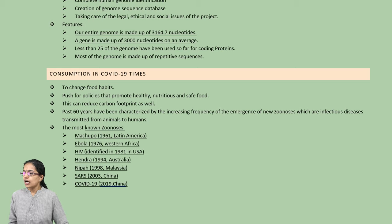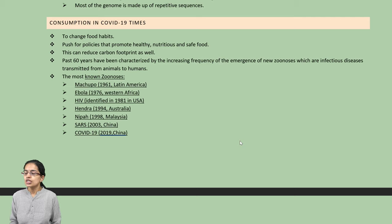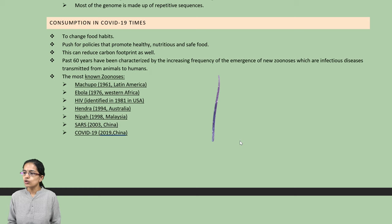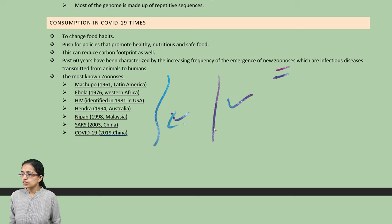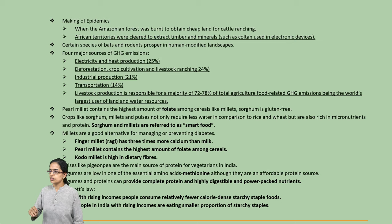Nutritional and safe food are considered important. The idea is to reduce carbon footprint and identify the emergence of zoonosis — diseases transmitted from animals to human beings. NIPAH was initially seen in Malaysia and then spread to various countries. SARS and COVID originated from China. These are some of the ways through which epidemics have originated.